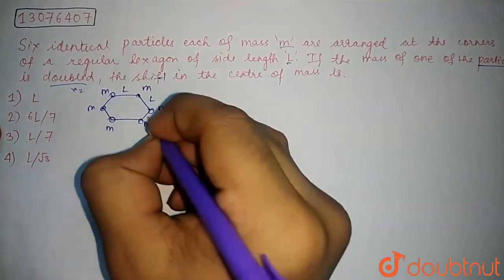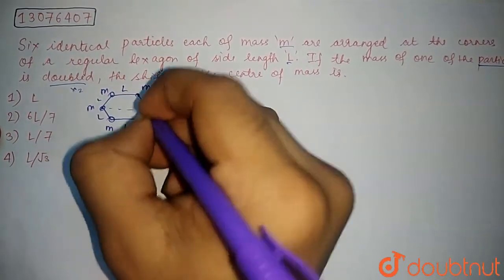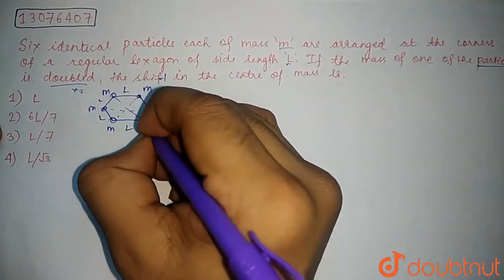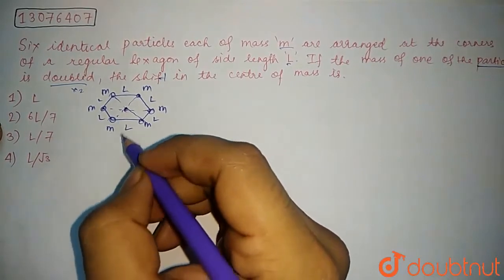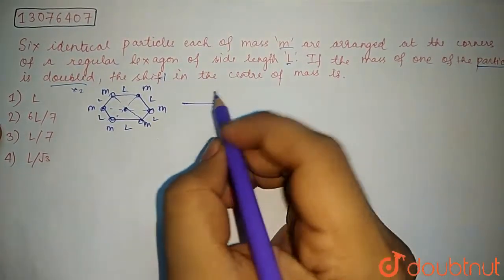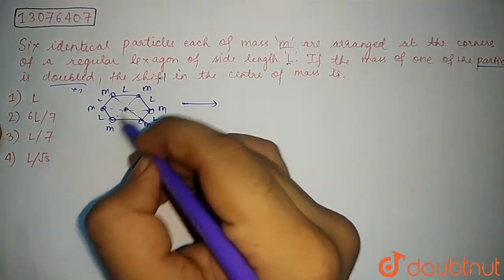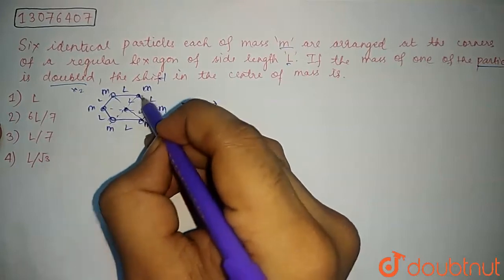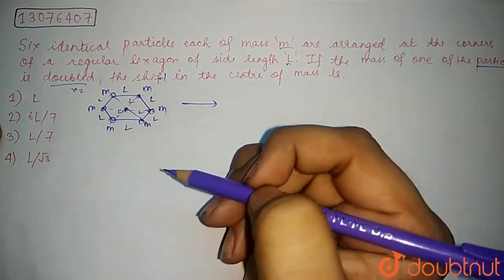This is a regular hexagon of side length L. This is the middle of the mass, in the middle of the mass. It is the middle of the mass here, in the middle, right here. OK.